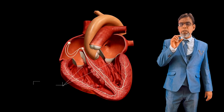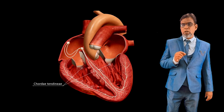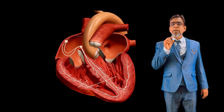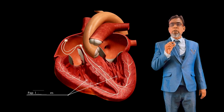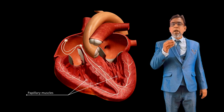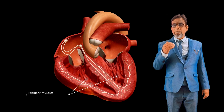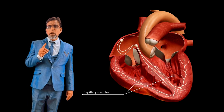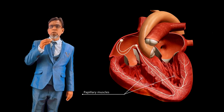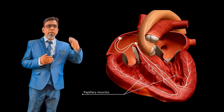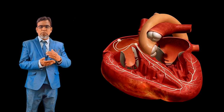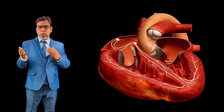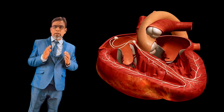The tricuspid and bicuspid valves are attached to special muscle fibers called chordae tendineae, which are further attached to the posterior wall of the ventricles. These valves help to allow blood in one direction — especially from the atrium to the ventricles and from the ventricles to the pulmonary artery and aorta — and prevent the backflow of blood.